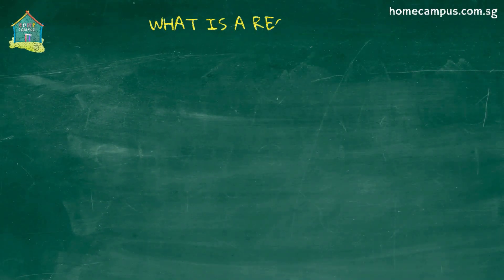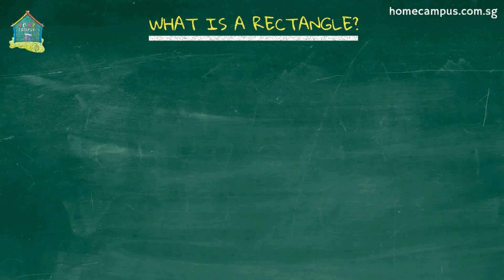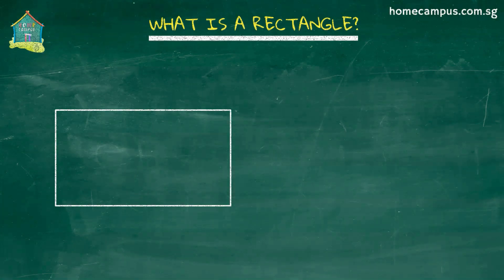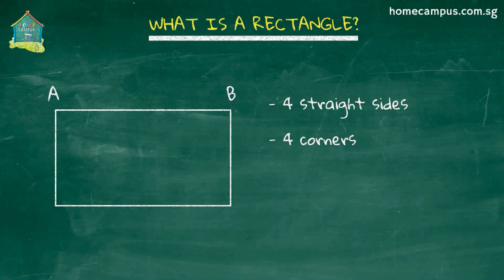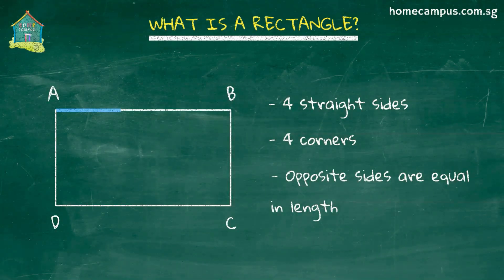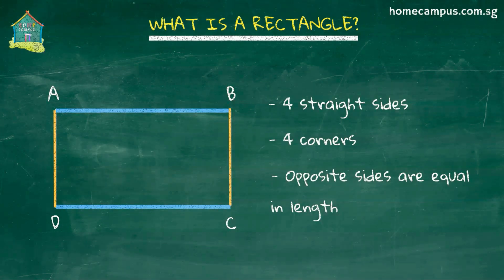So, what is a rectangle? A rectangle is a shape that has four straight sides and four corners. The opposite sides of a rectangle are equal in length. To understand rectangles better, we need to first learn about two types of lines: perpendicular lines and parallel lines.